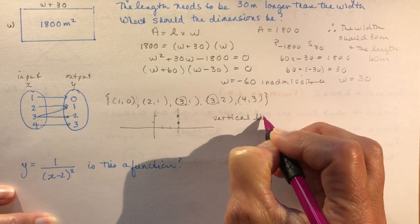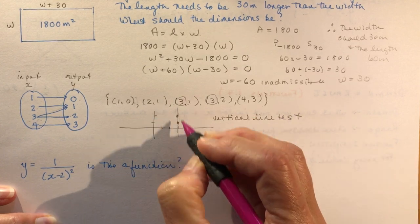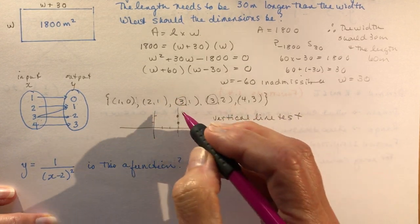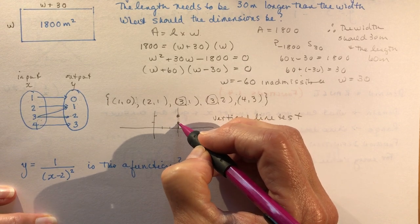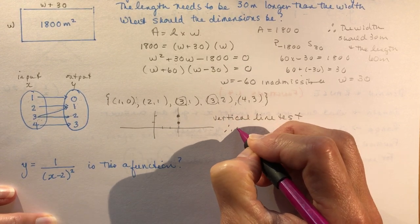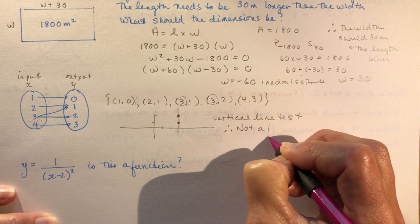Vertical line test said if you draw a vertical line on your graph of a function anywhere and you cross it more than one point, then it is not a function. Not a function.